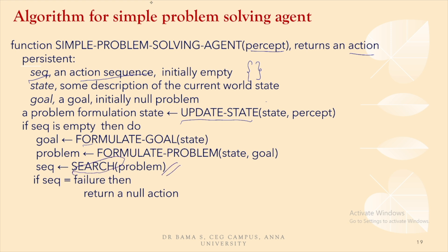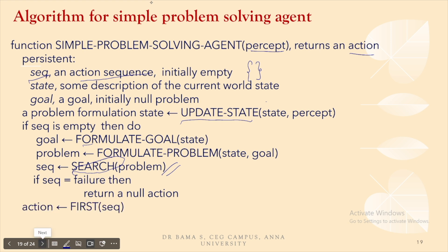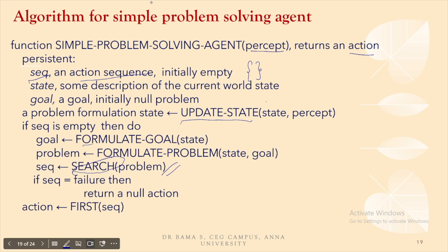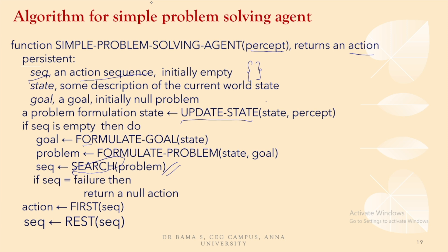The search puts the sequence of actions into a variable called SEQ. If the sequence is a failure, then it is a null action. Otherwise, take the first action so the agent performs it, and put the rest of the actions into SEQ. This can be mapped to a problem-solving agent or a goal-based agent.